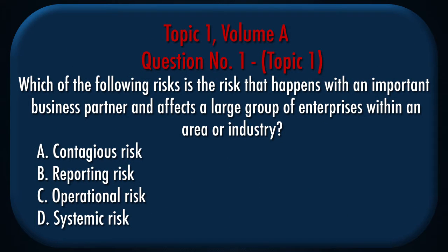Question number 1, Topic 1. Which of the following risks is the risk that happens with an important business partner and affects a large group of enterprises within an area or industry? A. Contagious Risk. B. Reporting Risk. C. Operational Risk. D. Systemic Risk.